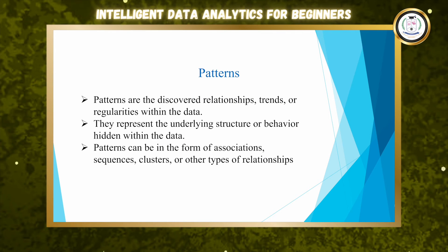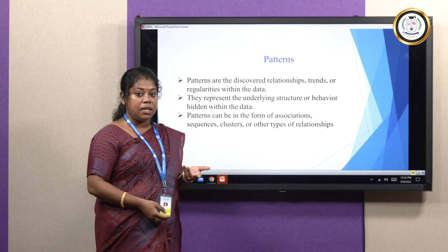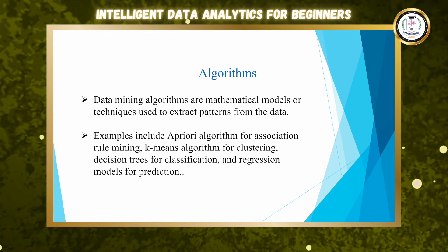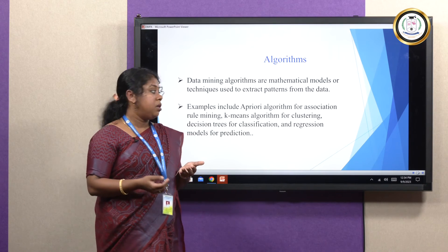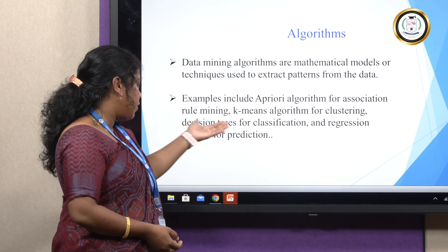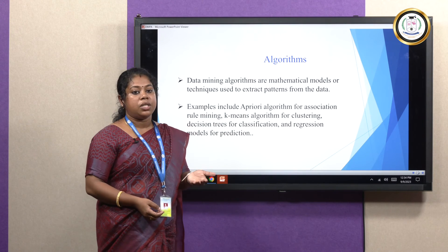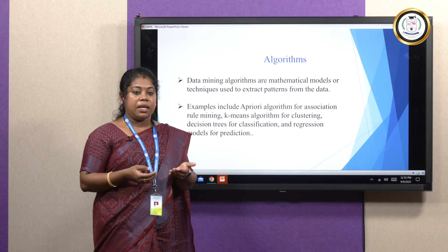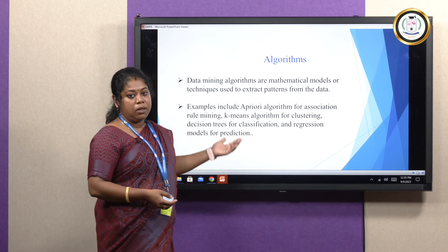Patterns are the discovered relationships, trends, or regularities within the data. They represent the underlying structure or behavior hidden within the data. Algorithms are mathematical models or techniques used to extract patterns from data. Examples include the Apriori algorithm for association rule mining, k-means and decision tree for classification, and regression models for predictions. There are many algorithms available nowadays.